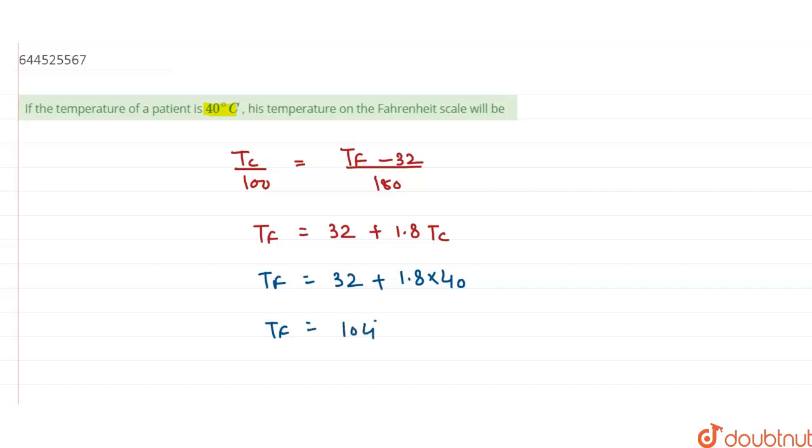104 degrees Fahrenheit. This is the temperature in Fahrenheit which is equal to 40 degrees Celsius. Thank you.